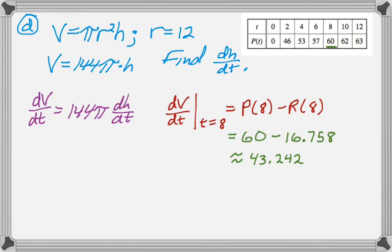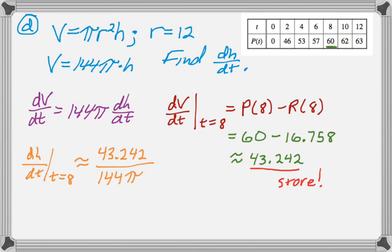And we're supposed to have units of measure, so that's going to be cubic feet per hour, which I've forgotten to write here, but make sure you write it on your paper. Now dh dt I'm just going to solve the equation above there. So that's going to be dV dt divided by 144 pi. And dV dt is what I just found, so that's going to be 43.242 over 144 pi, which is approximately 0.096. And then that's going to be in feet per hour. And height is a linear measure, so it should have linear units, and the time should be the same. And that's the entire question.